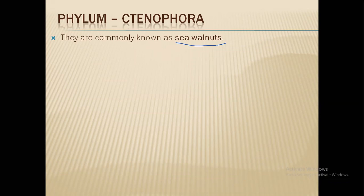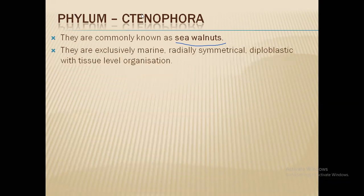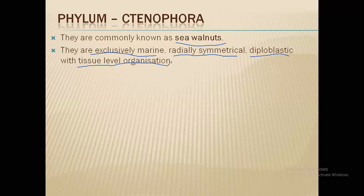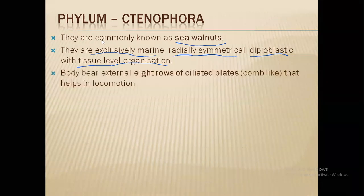Most organisms of this phylum are generally transparent — you can see through their body, but the shape is like a walnut. They are exclusively marine; you will not find them in fresh water, only in seas and oceans. They are radially symmetrical, diploblastic with two germ layers — endoderm and ectoderm — and have tissue level organization, similar to Coelenterata. This similarity is the reason Ctenophora was originally placed in Coelenterata before being separated.